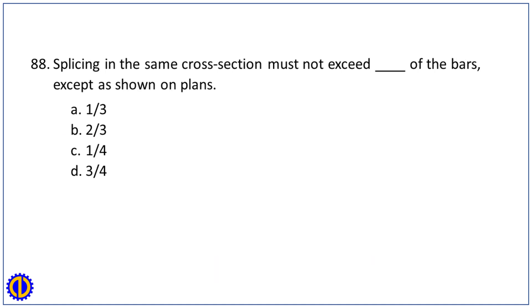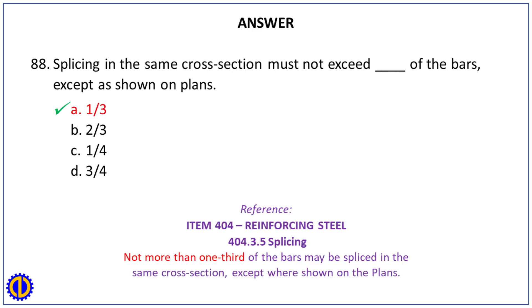Question 88. Splicing in the same cross-section must not exceed blank of the bars, except as shown on plans. A. 1/3. B. 2/3. C. 1/4. D. 3/4. Answer: A. 1/3. Reference: Item 404, Reinforcing Steel, 404.3.5 Splicing — not more than one-third of the bars may be spliced in the same cross-section, except where shown on the plans.